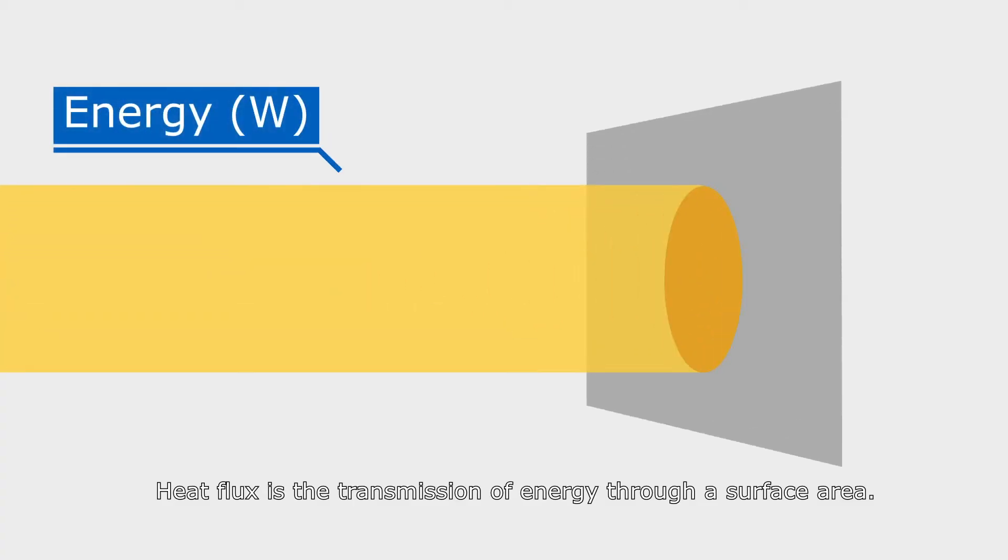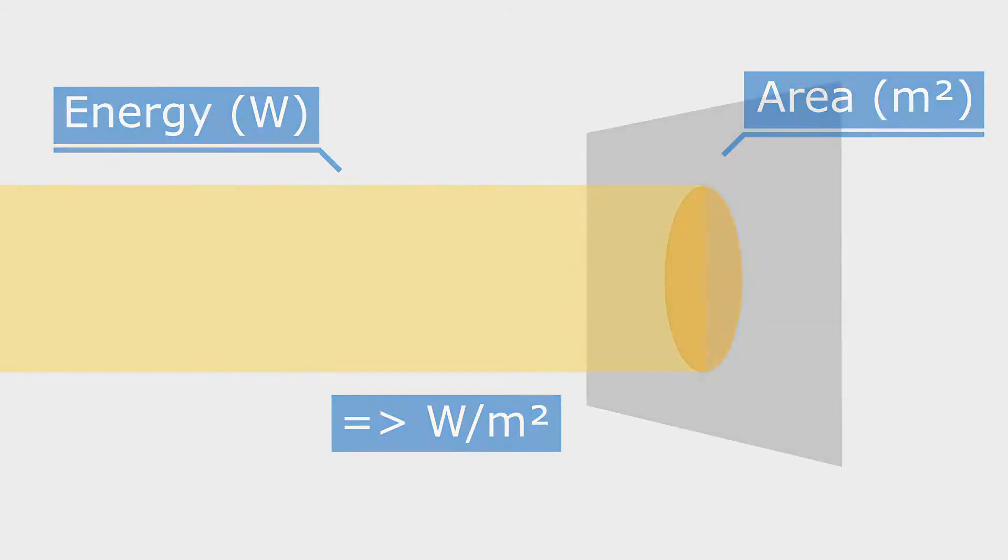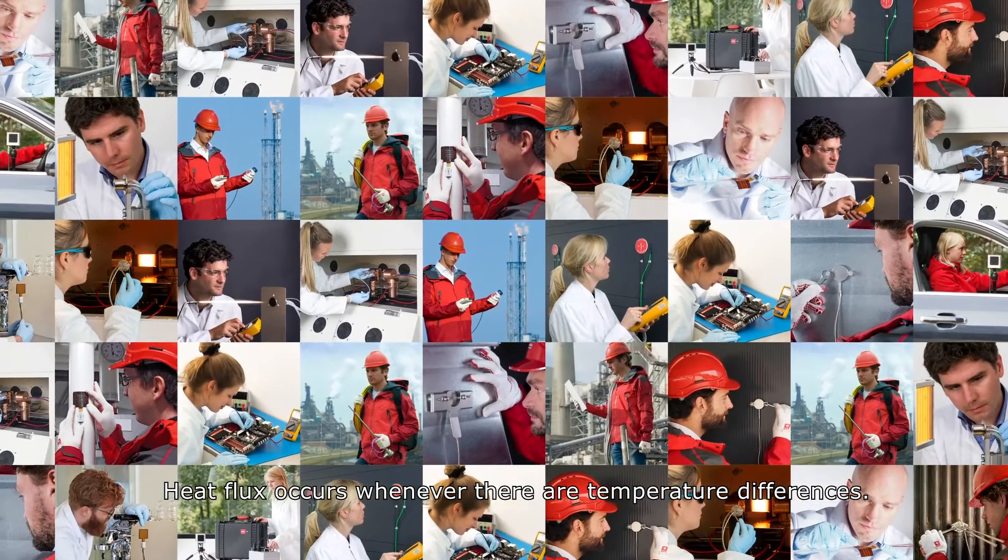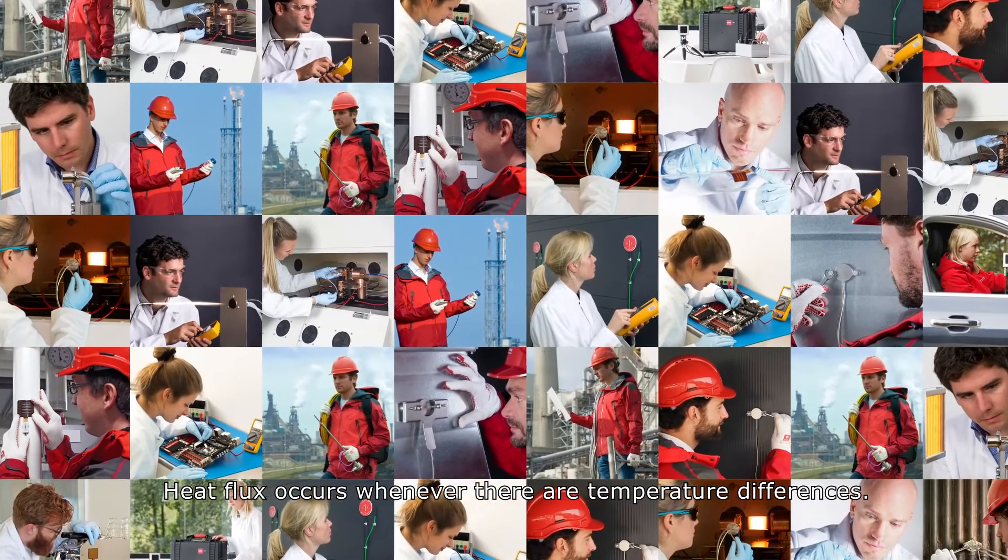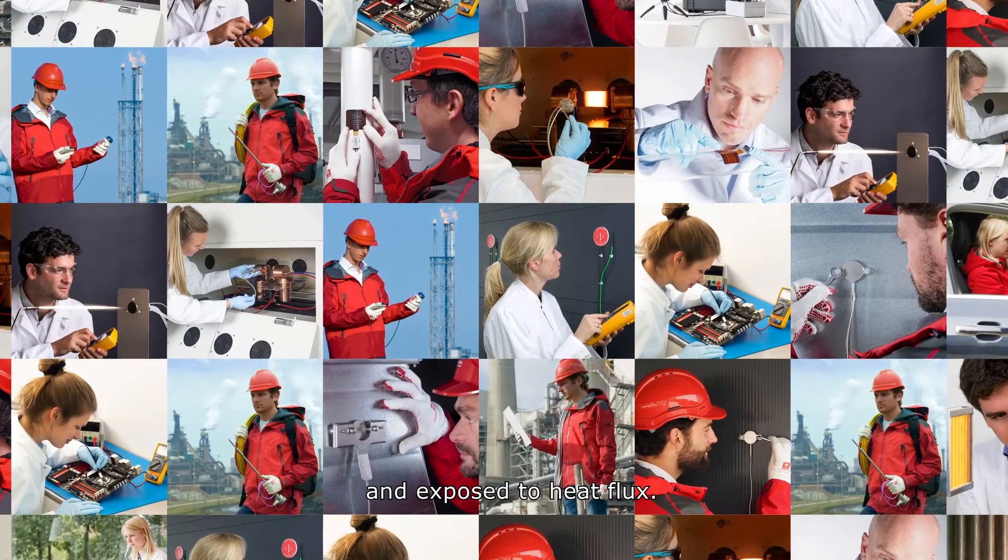Heat flux is the transmission of energy through a surface area. It is expressed in watts per square meter. Heat flux occurs whenever there are temperature differences. We are continuously surrounded by and exposed to heat flux.